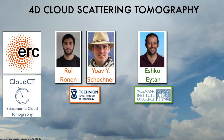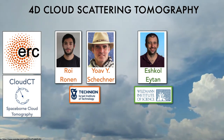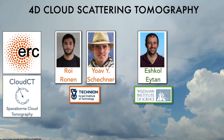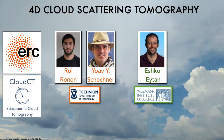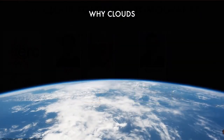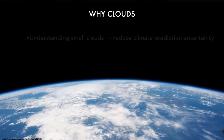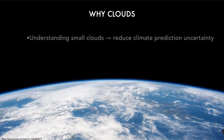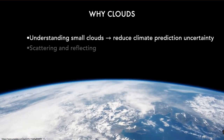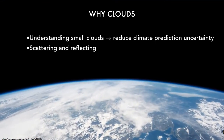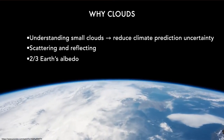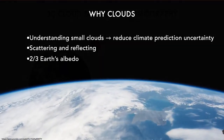We derive 4D spatiotemporal recovery of cloud microphysics using a small number of moving cameras. Clouds cause the largest uncertainties in climate change predictions because they highly reflect light and cover more than 60% of Earth in any given moment.